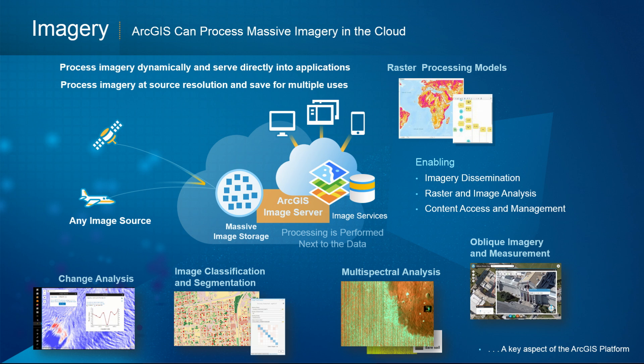Imagery is a hugely important area, both for visualization and information dissemination, on-the-fly analysis, and analysis at source resolution on really large data sets — where results can be persisted and reused — raster analytics on big data. All of that is powered by the ArcGIS Image Server, which provides image services for dissemination as well as persistent analytics.